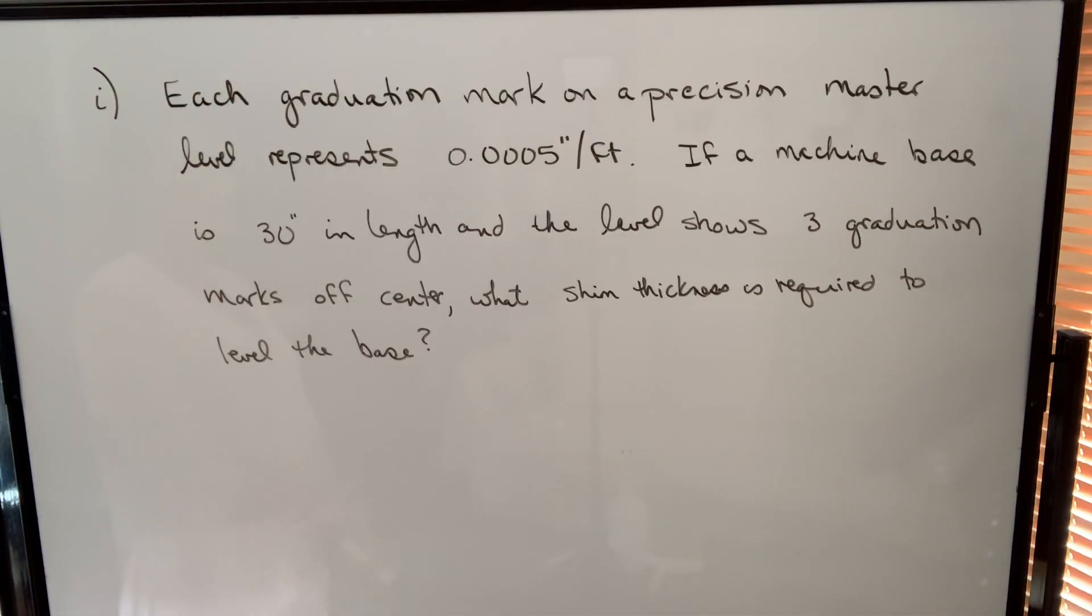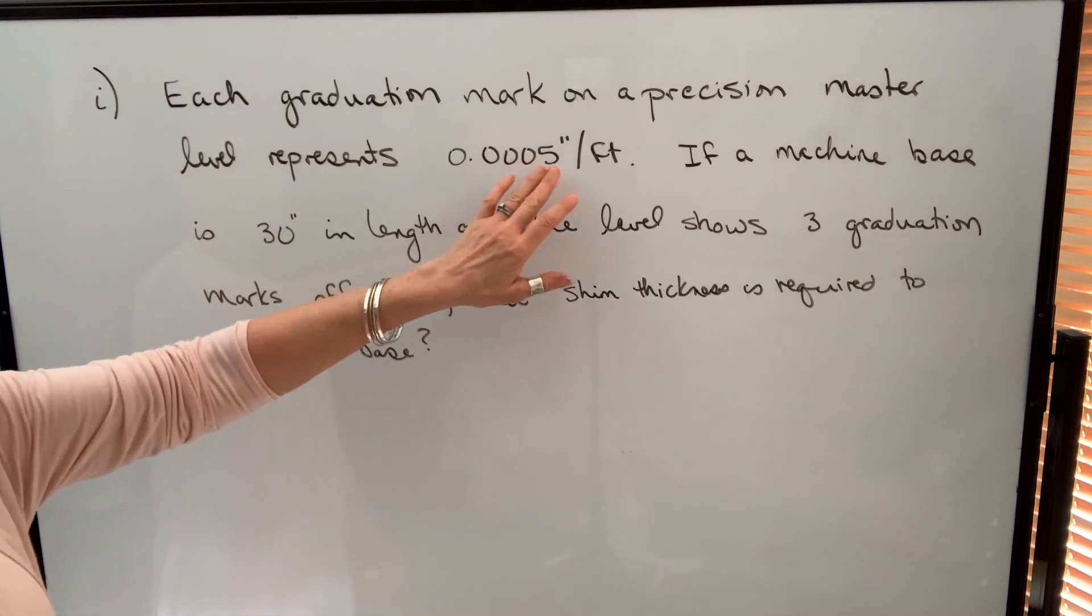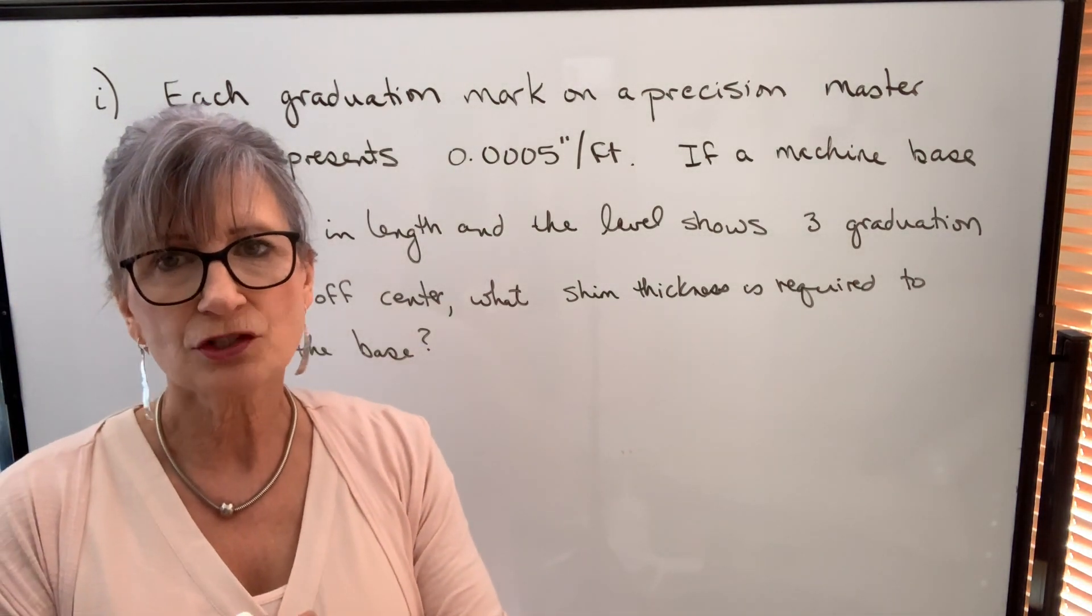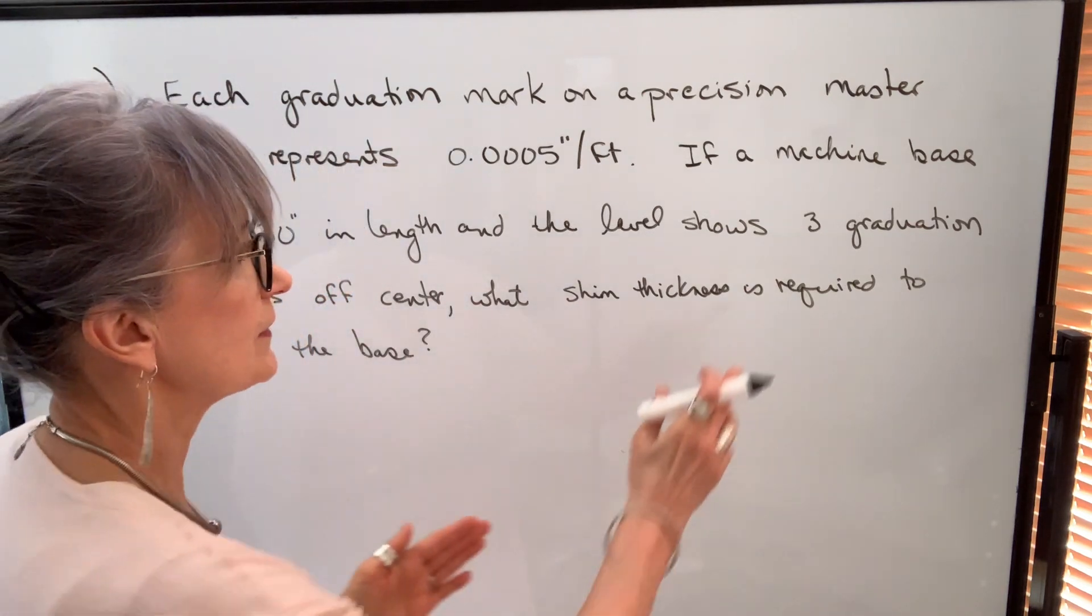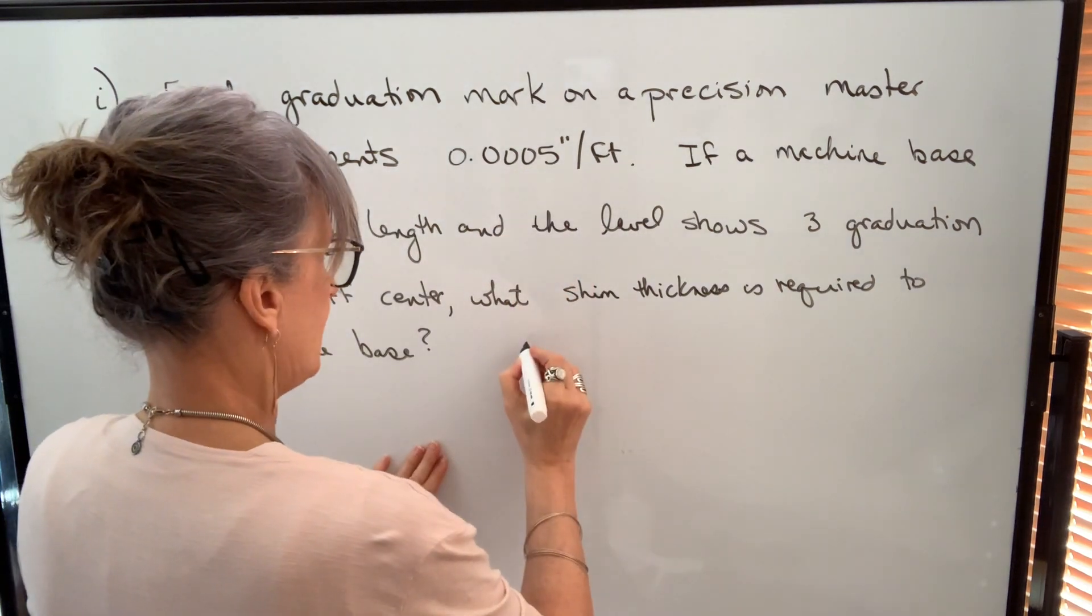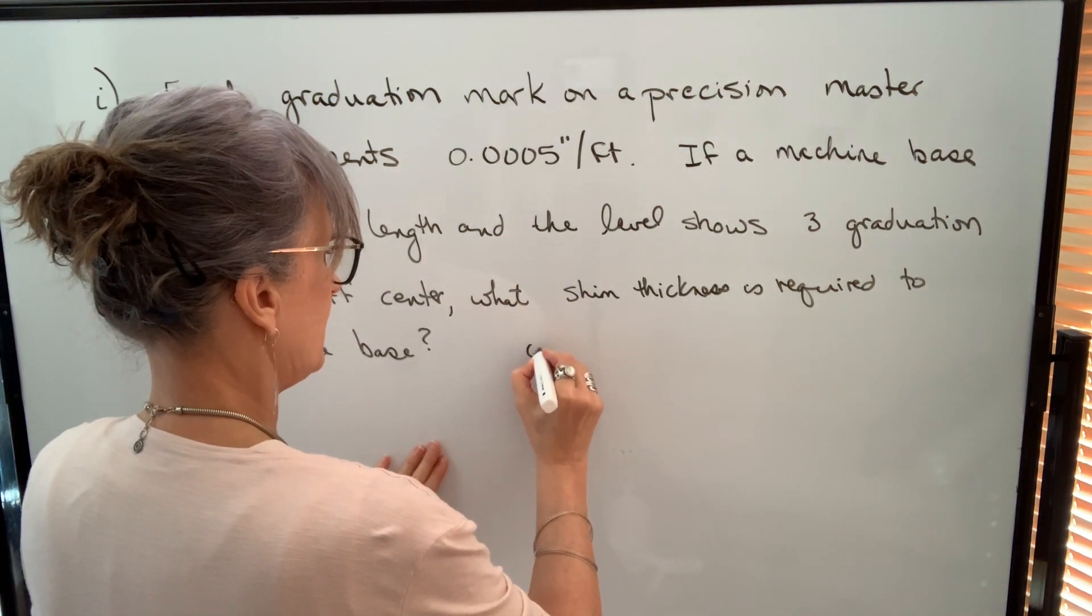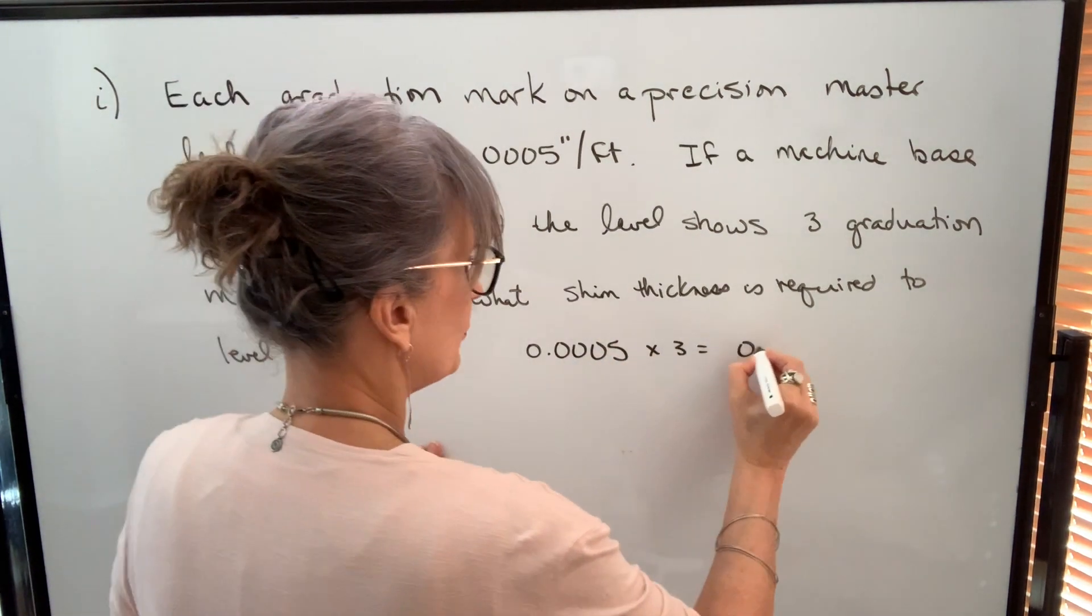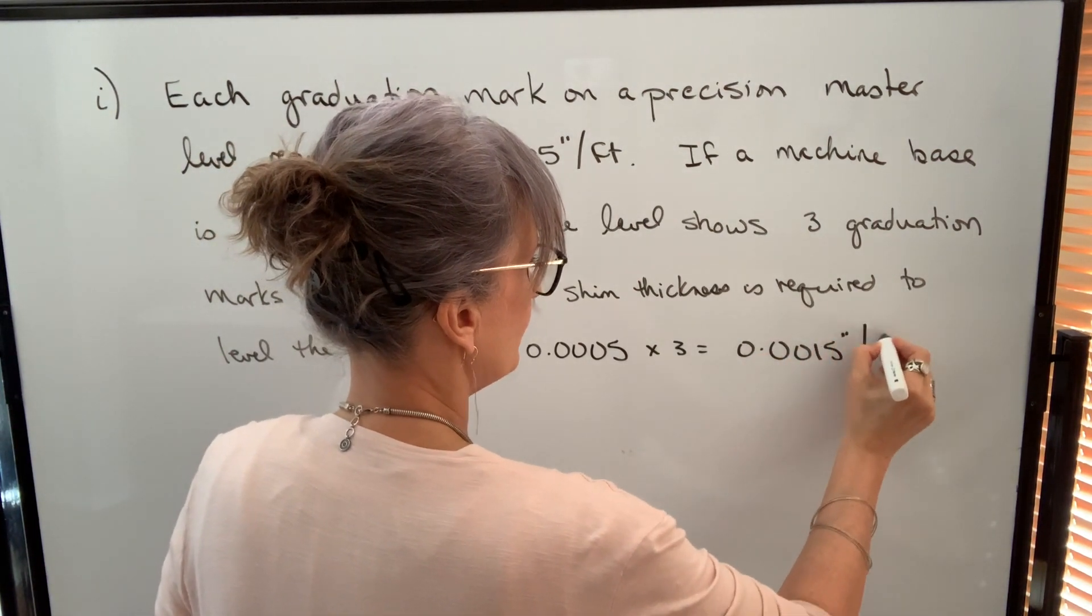Our first example uses a precision master level, and it says each graduation mark represents .0005 inches per foot. If a machine base is 30 inches in length, and the level shows three graduation marks off center, what shim thickness is required to level the base? So we're going to start with how much this level is out in total. If it's three graduation marks, and each graduation mark represents this amount, then the misalignment will be .0005 times 3 to get .0015 inches per foot.